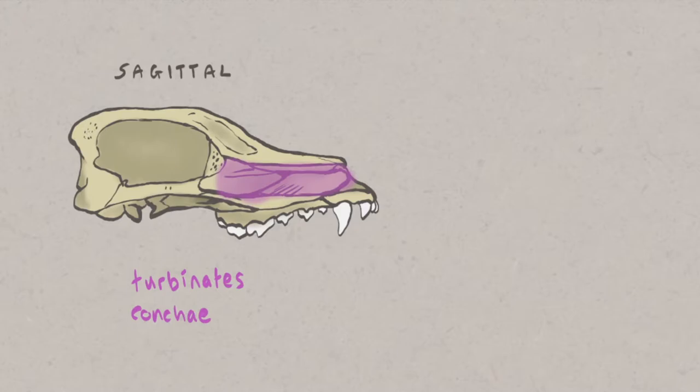Cilia, which are small, beating, hair-like projections on the surface of the epithelial cells, move the mucus to the pharynx where it can be swallowed. If there is inflammation in the nasal chambers, more mucus is produced and this may be seen as nasal discharge at the external nares.